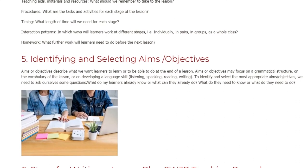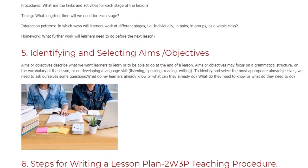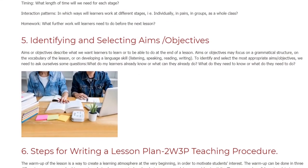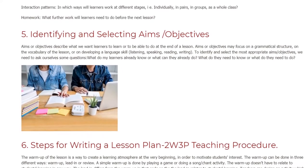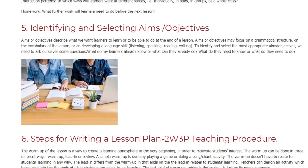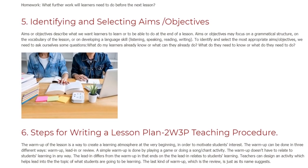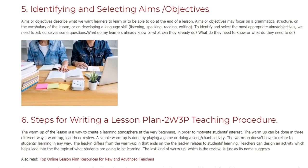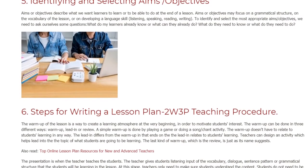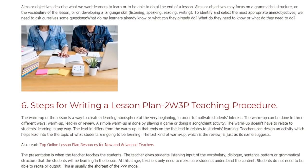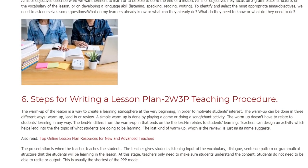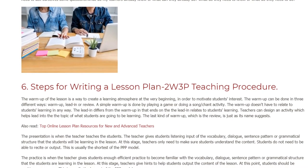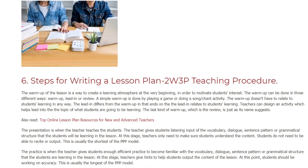Steps for Writing a Lesson Plan: the 2W3P Teaching Procedure. The warm-up of the lesson is a way to create a learning atmosphere at the very beginning, in order to motivate students' interest. The warm-up can be done in three different ways: warm-up, lead-in, or review. A simple warm-up is done by playing a game or doing a song or chant activity, and doesn't have to relate to students' learning. The lead-in differs from the warm-up in that it relates to students' learning — teachers can design an activity which helps lead into the topic of what students are going to be learning. The last kind, the review, is just as its name suggests.